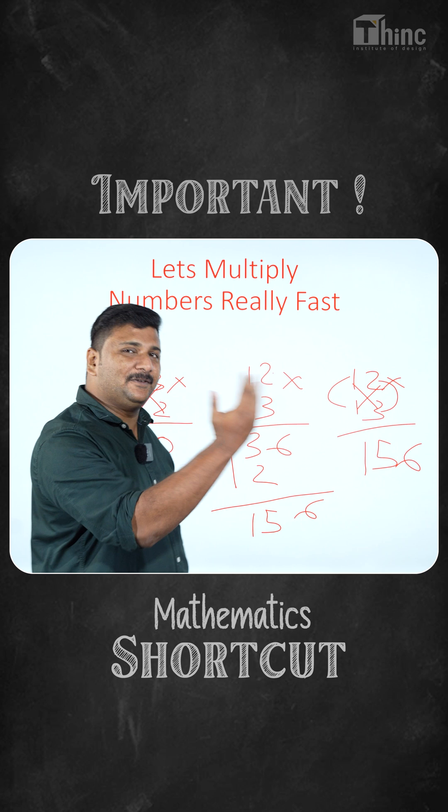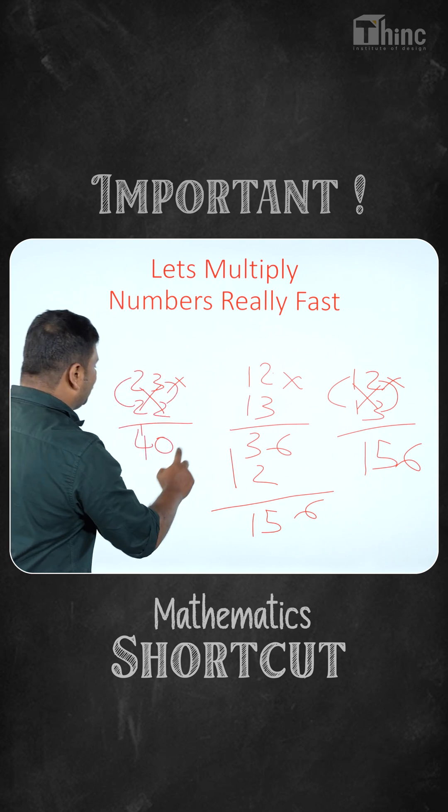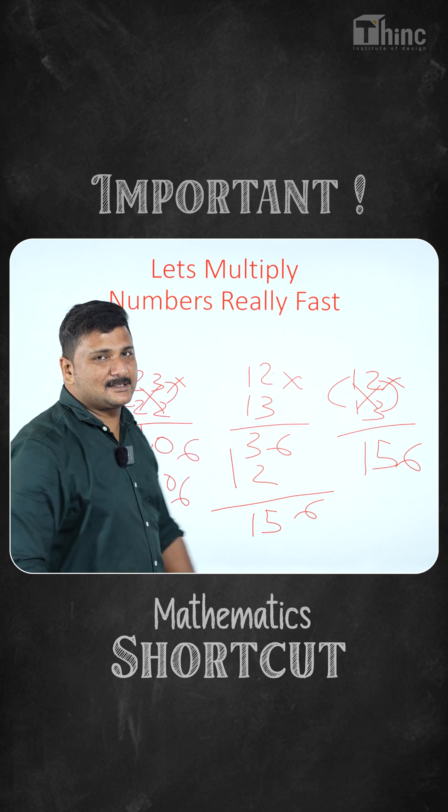So whenever we get a two digit number carry over the first digit to the left. Now we have 3 x 2 that is 6, so the correct answer will be 506 as simple as that.